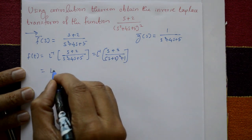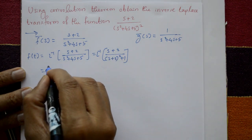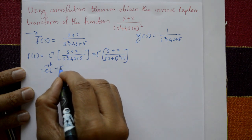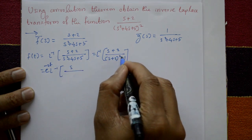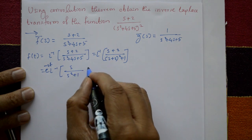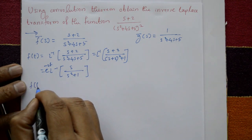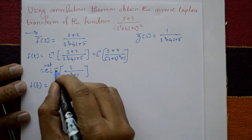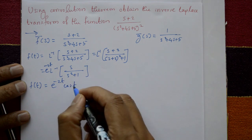Using the shifting property, take s + 2 outside: this gives e^(−2t) multiplied by the inverse of s / (s² + 1). Therefore f(t) = e^(−2t) cos(t).